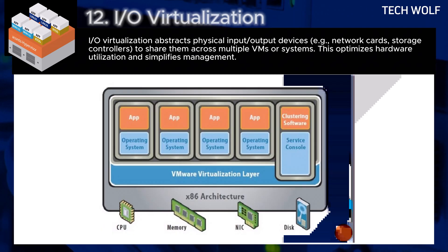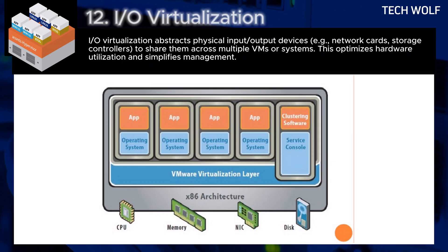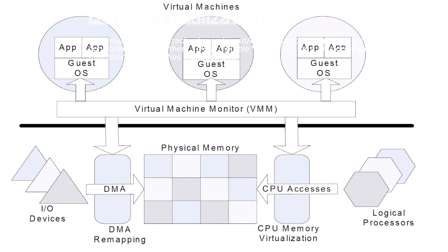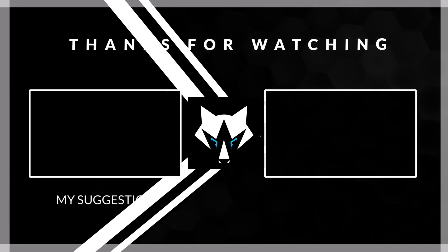The last virtualization type is I/O virtualization, or input-output virtualization. I/O virtualization abstracts physical input-output devices — such as network cards and storage controllers — to share them across multiple virtual machines or systems. This optimizes hardware utilization and simplifies management. An example is Intel VT-d technology, which virtualizes I/O devices like NICs (network interface cards), allowing each virtual machine to directly communicate with a virtual NIC. A data center can run multiple virtual machines using the same physical I/O resources while maintaining performance isolation.